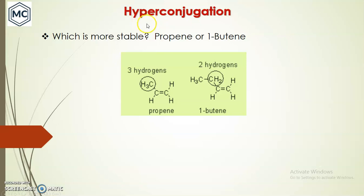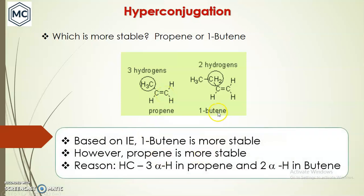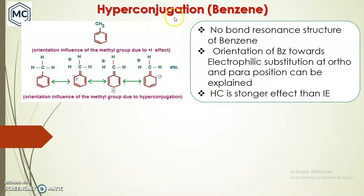Based on hyperconjugation, which is more stable — propene or 1-butene? Based on inductive effect, the ethyl group has a greater +I effect than the methyl group, so 1-butene should be more stable. But that is not true. Propene is more stable than 1-butene because of hyperconjugation. Propene has three alpha hydrogens, whereas 1-butene has only two alpha hydrogens.